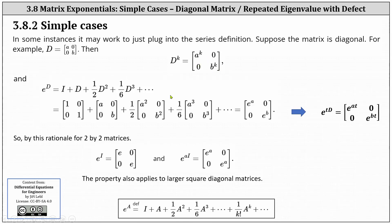And now if we apply the definition for e to the power of D, we have e to the power of D equals I plus D plus one half D squared plus one sixth D cubed and so on — using the definition shown at the bottom of the screen. We replace I with the two by two identity matrix and replace D and its powers with the appropriate matrix. Looking at the entries in row one column one, the sum is the Taylor series for e to the power of a. Similarly, the entries in row two column two give us the series for e to the power of b.